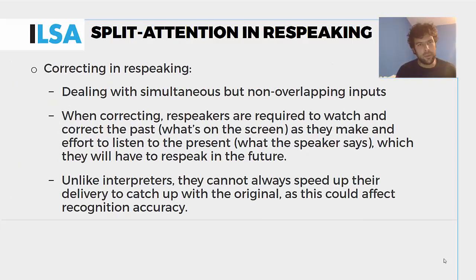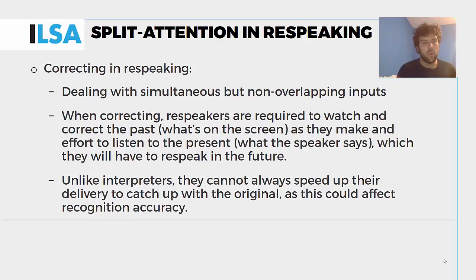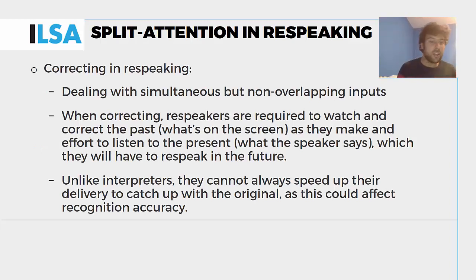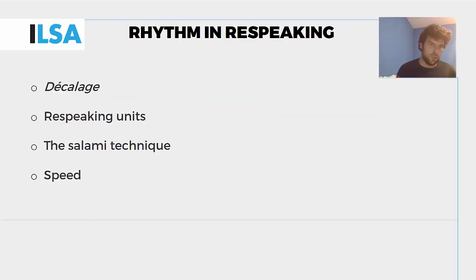When we are correcting and respeaking, we're dealing with simultaneous but non-fully overlapping inputs. We are watching and correcting the past — what's on screen — as we make an effort to listen to the present, that is what the speaker keeps saying, which we then have to respeak in the future. Unlike interpreters, who can speed up their delivery to catch up with the original, we can't do that, because this can affect recognition accuracy. Correction in respeaking is probably the single most challenging task.